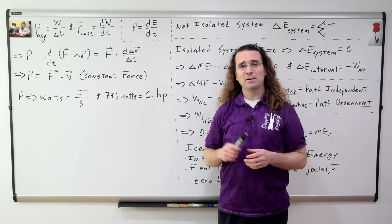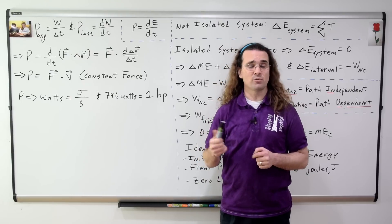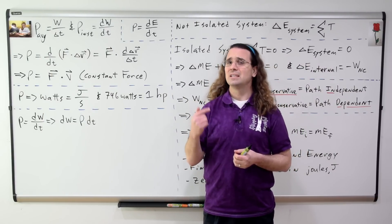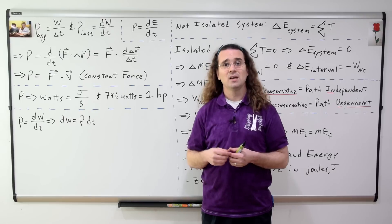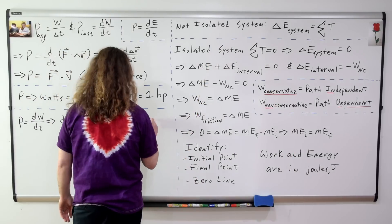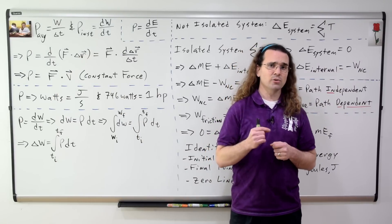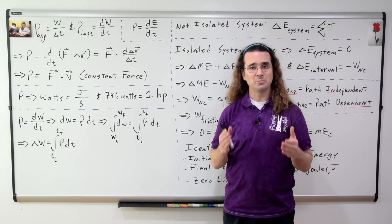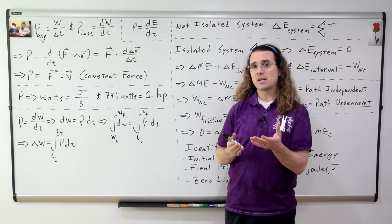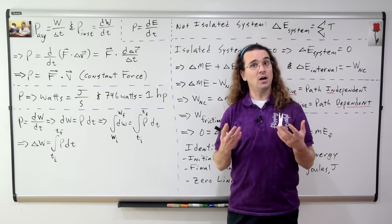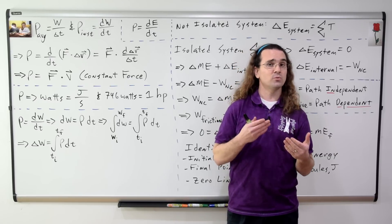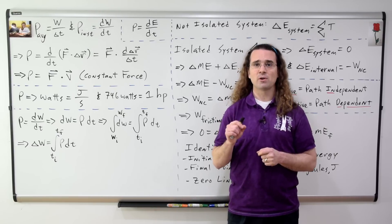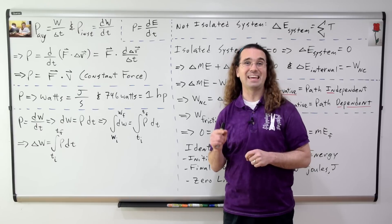Every derivative is also an integral or anti-derivative. For example, power equals the derivative of work with respect to time can be rearranged to dW equals power times dt. Taking the definite integral of both sides gives the change in work equals the integral from time initial to time final of power with respect to time. So if you have a graph of power versus time, the area under that curve equals the change in work on the object. Every derivative can be rearranged as an integral, and every integral can be rearranged as a derivative.